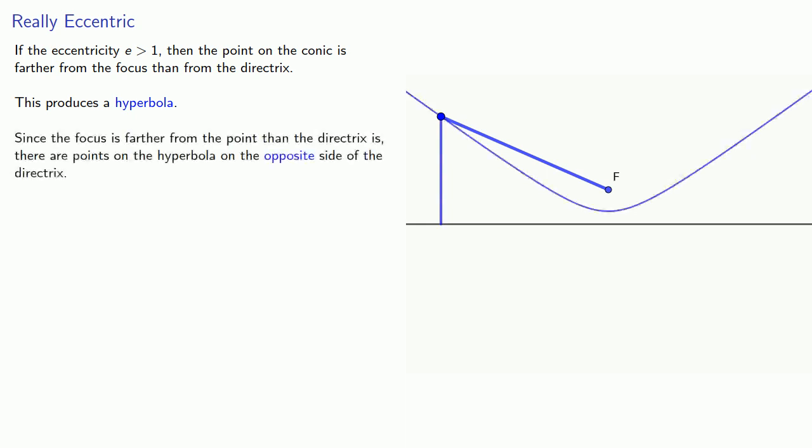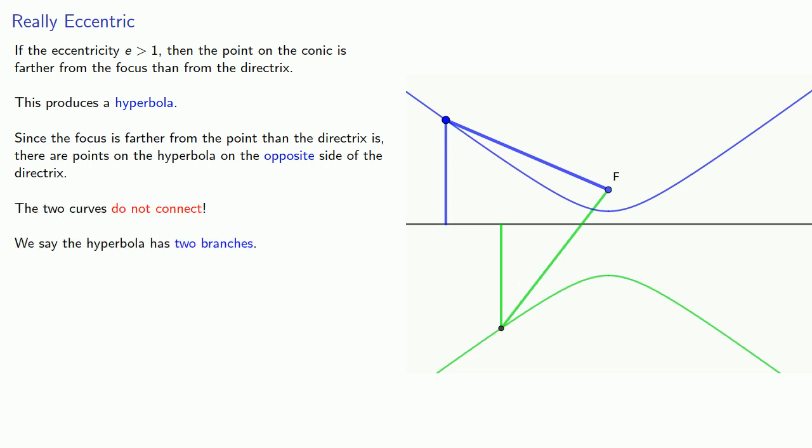Now, since the focus is farther from the point than the directrix is, there are actually points on the hyperbola on the opposite side of the directrix. The important thing here is the two curves do not connect, and we say the hyperbola has two branches.